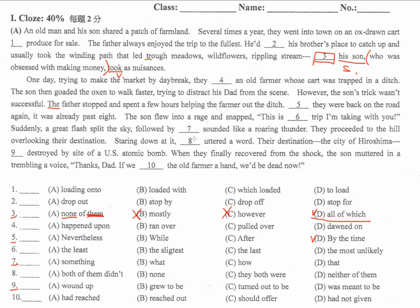Suddenly, a great flash split the sky, followed by what... 這邊要用 what，因為 what 相當於 something that。你如果用 something，你還是要有個 that；你用 that，就少了 something。因為我們這邊需要一個名詞，又需要一個形容詞子句，唯一的就是 what，它可以結合名詞跟關係代名詞，代替「某樣東西然後它怎麼樣怎麼樣」的整個結構。